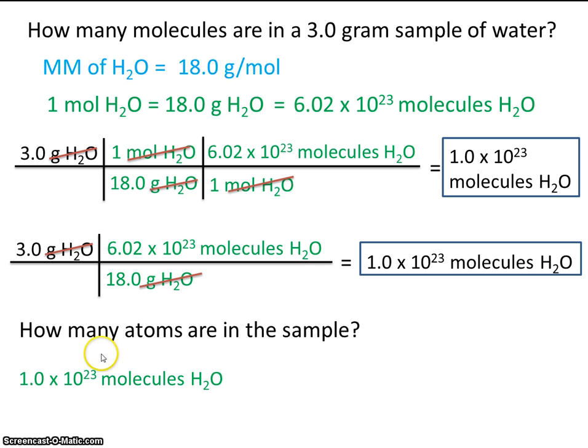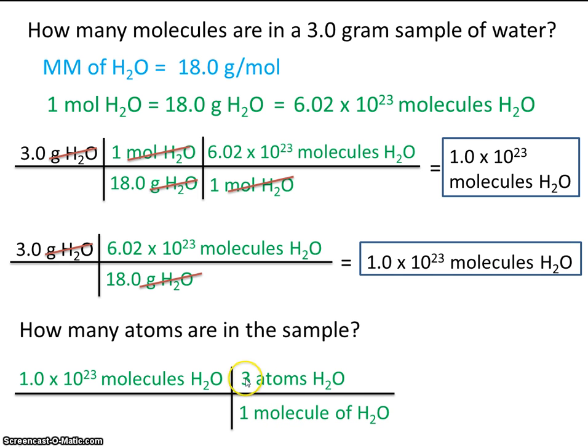So we know that we have this many molecules of water. And we want to know how many atoms are there. Well, we need molecules, of course, on the bottom. And we know, we've established that one molecule of water has three atoms in it. So make sure these are equivalent. If we have one molecule of H2O, don't we have three atoms? Sure we do. Two hydrogens and one oxygen. So molecules in the numerator, we'll cancel molecules in the denominator. So just multiply this number times that number, and there's your total.